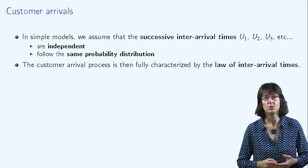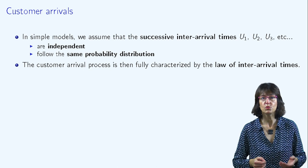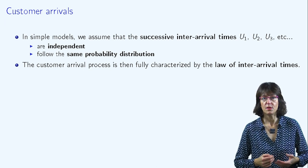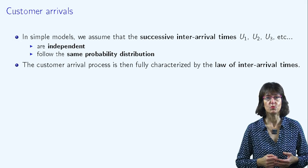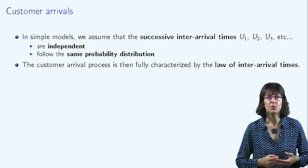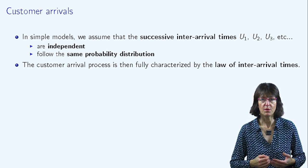In simple models, it is assumed that the successive interarrival times, u1, u2, u3, etc., are mutually independent and that they follow the same probability distribution. In this case, the customer arrival process is therefore fully characterized by the law of interarrival times.